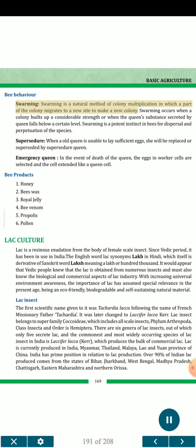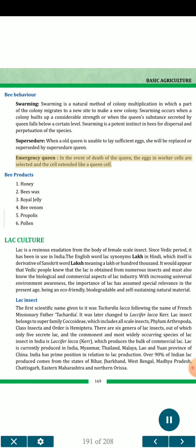Bee behavior — Swarming: Swarming is a natural method of colony multiplication in which a part of the colony migrates to a new site to make a new colony. It occurs when a colony builds up considerable strength or when the queen's substance secreted by the queen falls below a certain level. Swarming is a potent instinct in bees for dispersal and perpetuation of the species. Supersedure: When an old queen is unable to lay sufficient eggs, she will be replaced by a supersedure queen. Emergency queen: In the event of death of the queen, eggs in worker cells are selected and the cell extended like a queen cell. Bee products include honey, beeswax, royal jelly, bee venom, propolis, and pollen.